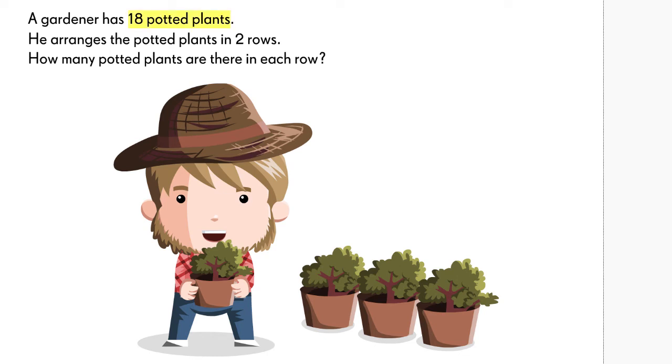A gardener has 18 potted plants. He arranges the potted plants in two rows. How many potted plants are there in each row?